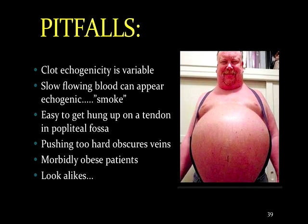There are many pitfalls to two-point compression ultrasonography for evaluation of DVTs. Echogenicity is not something you can rely on — you can't determine just from appearance whether a clot is present or how old it is. Slow flowing blood can also appear echogenic like smoke, but slow flowing blood would be fully compressible. In the popliteal fossa, it's very easy to catch one side of the probe on one of the hamstring tendons — here it is helpful to have a linear probe with a smaller footprint if possible, like the L25. If you push too hard initially, you may not be able to find the vein. In morbidly obese patients, their veins are sometimes more than six centimeters down, so the high-frequency probe with a six-centimeter depth capacity may not be adequate.